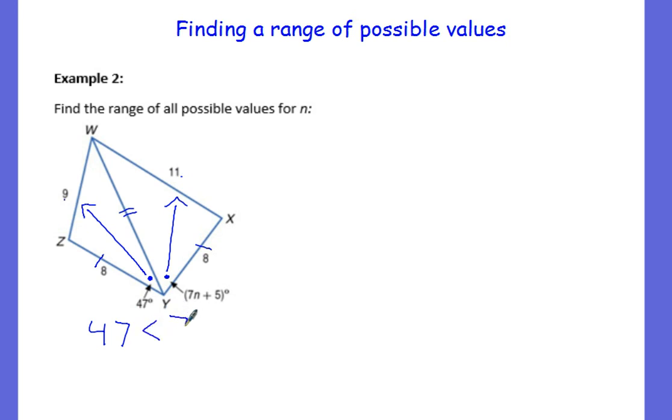9 is less than 11, which means this angle is less than this angle. So I set that up. 47 is less than 7n plus 5. Then we go ahead and solve for n, subtract 5, so we get 42 is less than 7n, divide by 7, that would be 6. And then I want to totally rotate that, so my variable is always on the far left. So I'd write n is greater than 6. Not too bad getting that first inequality, that's always the easiest part.